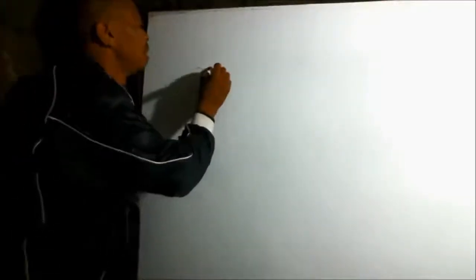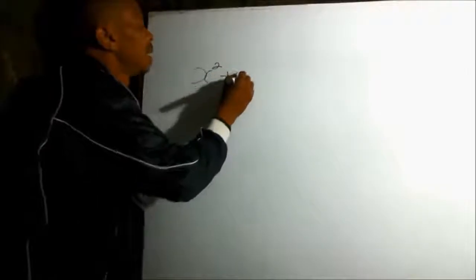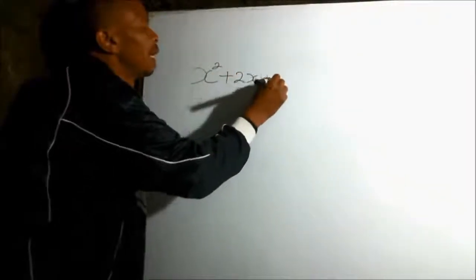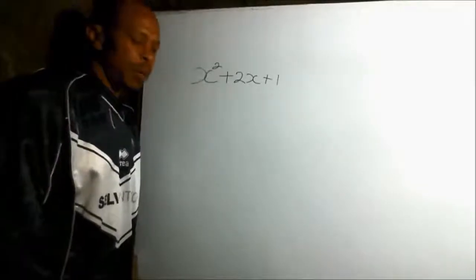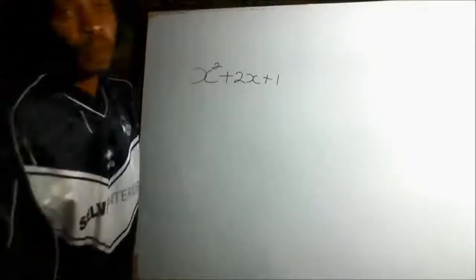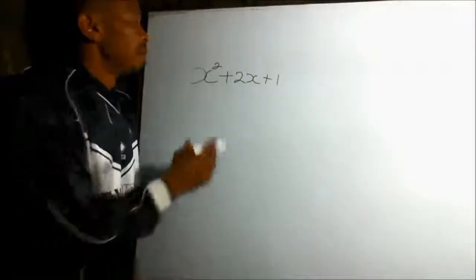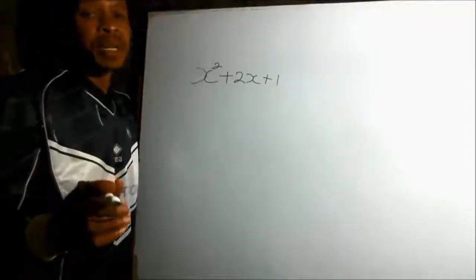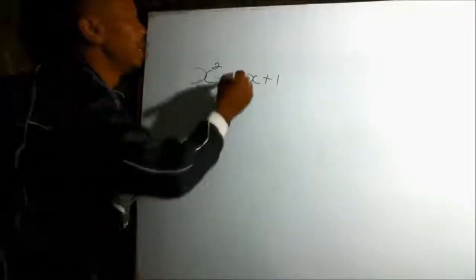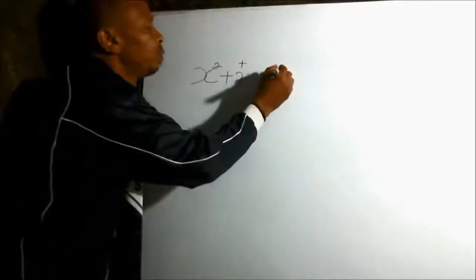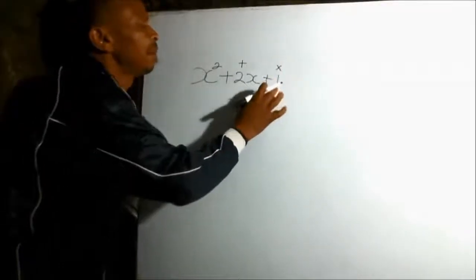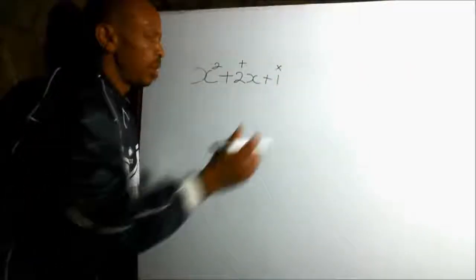First example: we have a quadratic expression which is x squared plus 2x plus 1. In Form 2, you learned how to factorize. For you to factorize a quadratic expression, get two numbers such that when you add them, you get the coefficient of x, and when you multiply them, you get the constant.